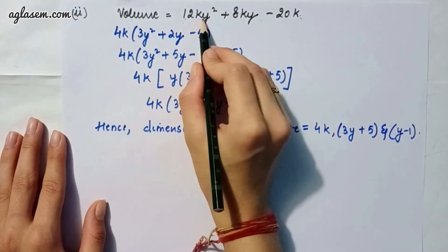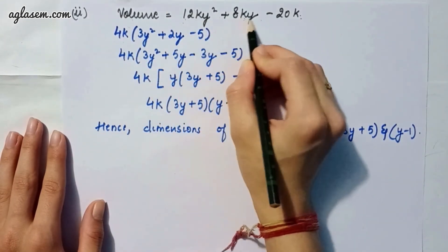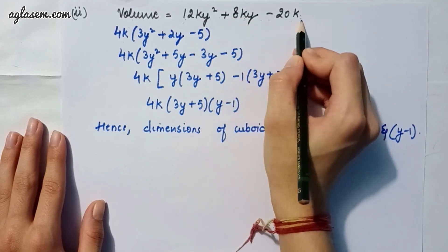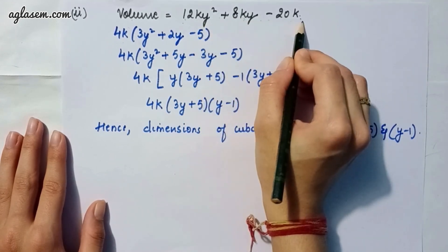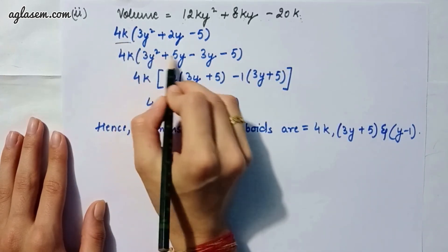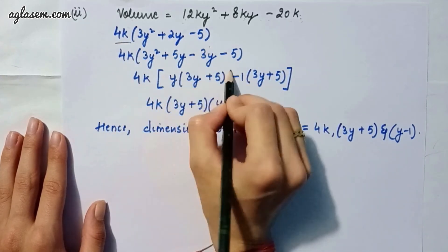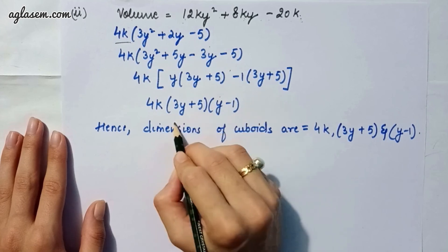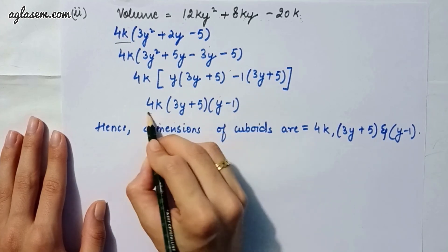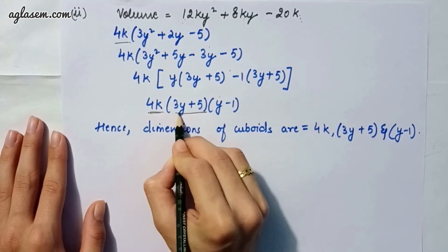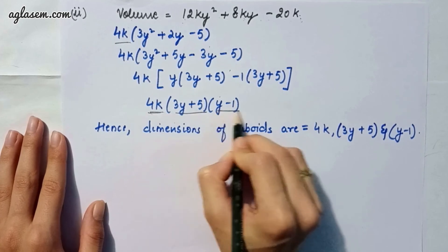Part two: volume = 12ky² + 8ky - 20k. We take out the common factor 4k to get 4k(3y² + 2y - 5). Solving the quadratic gives dimensions 4k, (3y + 5), and (y - 1).